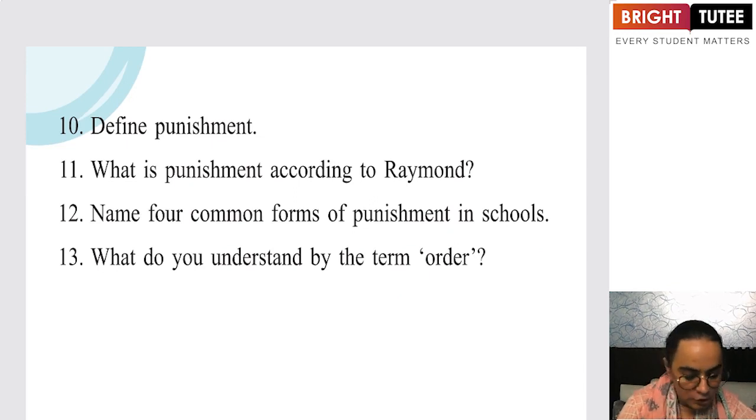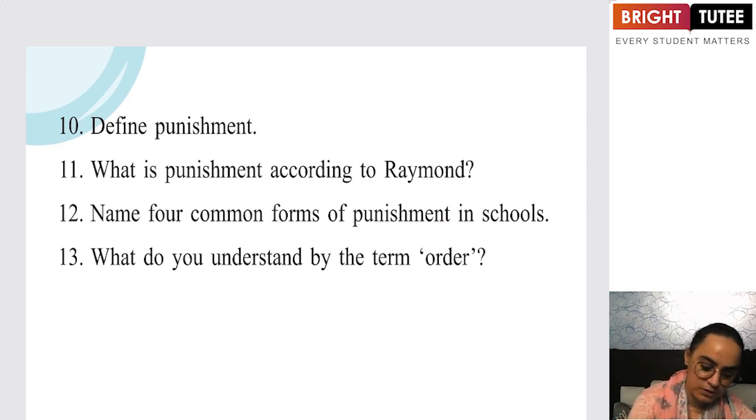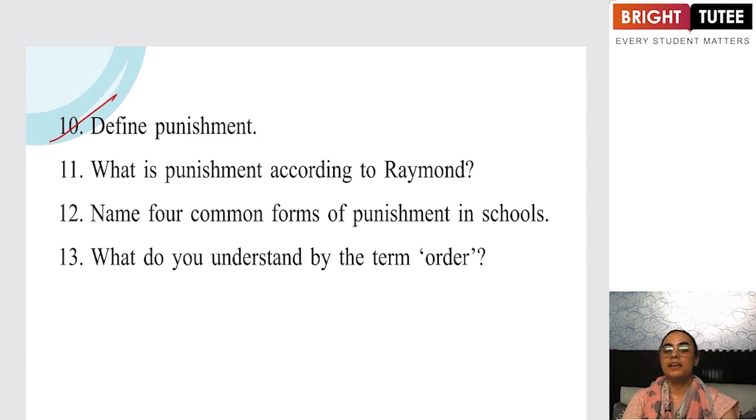Define punishment. Punishment is disregarding somebody for something that they have done. What was punishment according to Raymond? There is a definition of punishment that Raymond has given, which you will be writing.